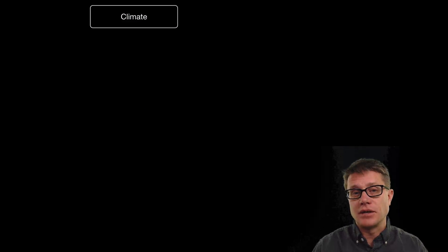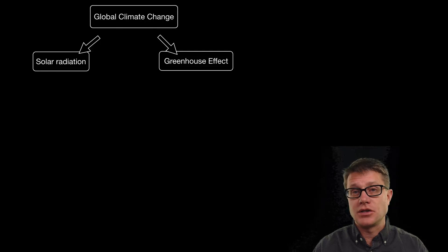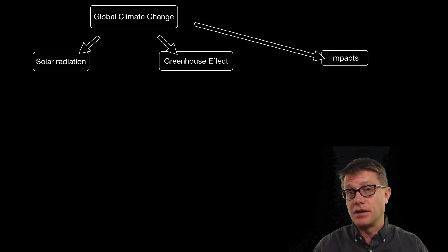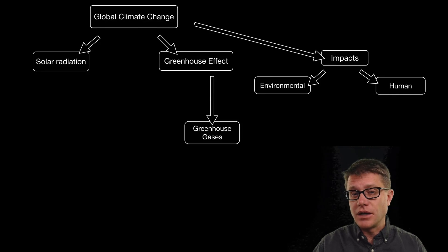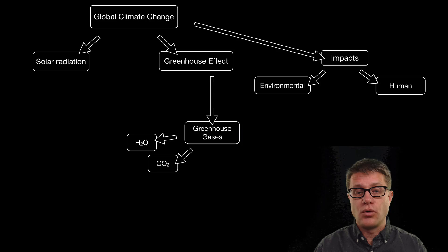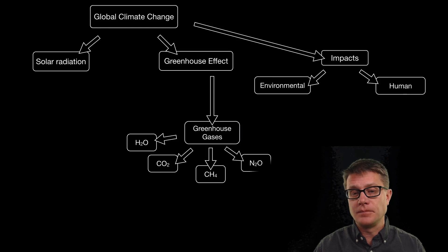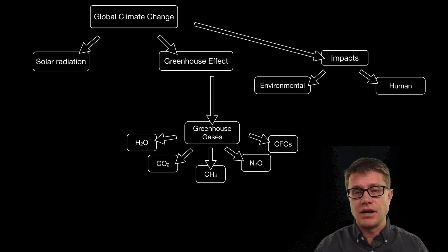The climate is affected by solar radiation and the greenhouse effect, and as those change we get global climate change which can impact the environment and therefore humans. The problem right now is it is getting too hot too fast. We cannot really affect solar radiation, so we look to the greenhouse gases as a culprit. The five greenhouse gases we will talk about are water vapor, carbon dioxide, methane, nitrous oxide, and CFCs. What they do in the atmosphere is essentially trap infrared radiation.